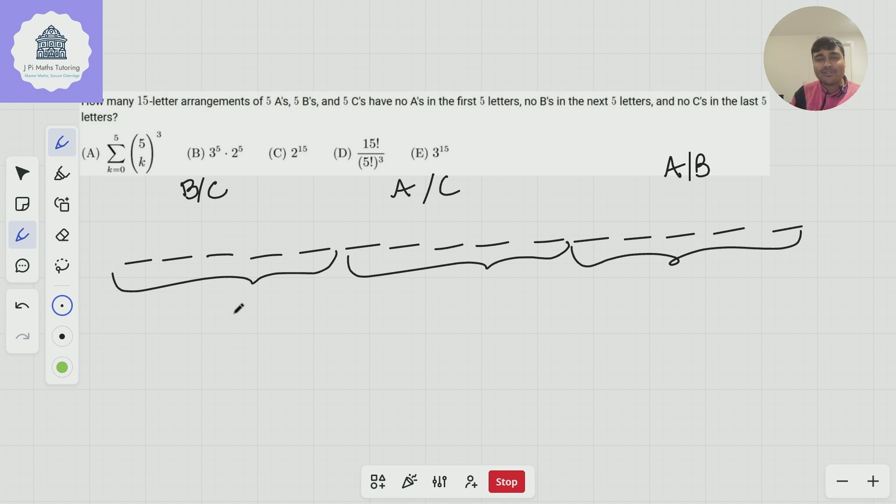Okay, now the way we're going to do this is we're going to condition based on the number of Bs that we put in the first group. So suppose we put K Bs in the first group. We've got five Bs out of the 15 letters that we have. We could put zero Bs in this group.